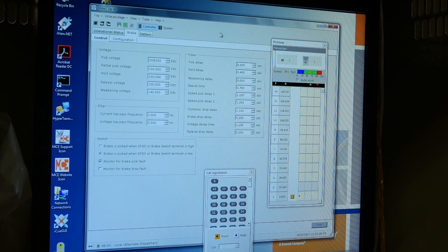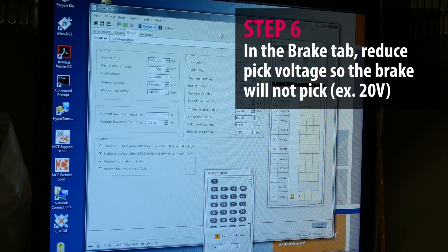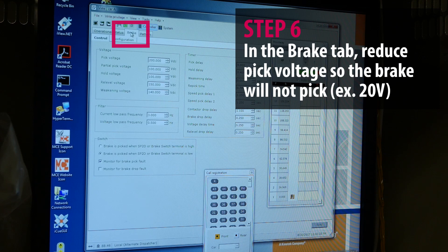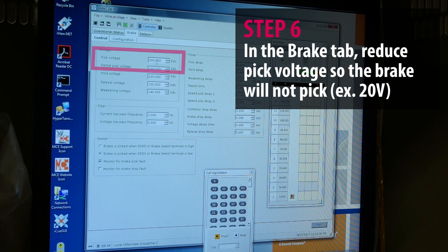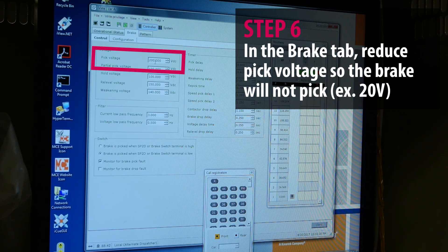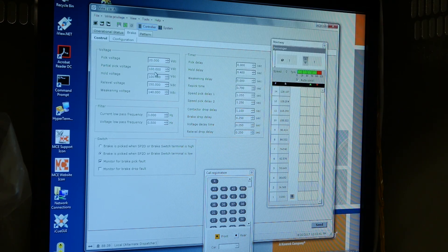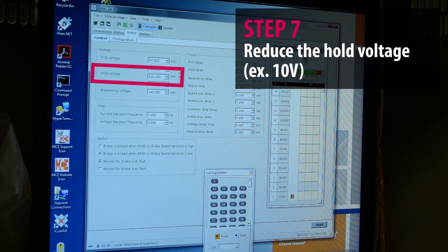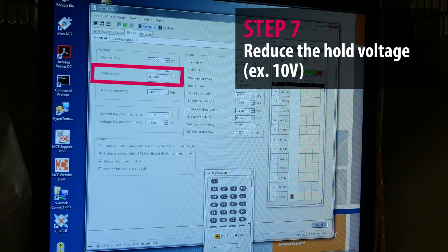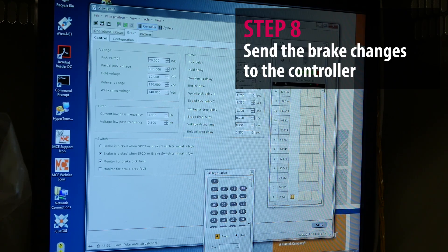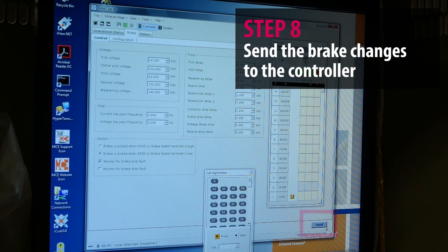To prevent the brake from releasing on the iControl in iView, go to the brake settings. You'll want to reduce the brake pick voltage to a minimum such that the brake won't pick—a good example is 20 volts—and also the hold voltage, set that to a lower voltage such as 10 volts. Then from there you have to send the changes by going to send.